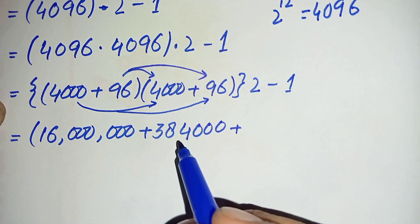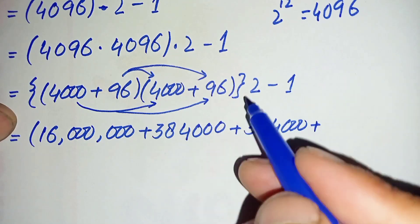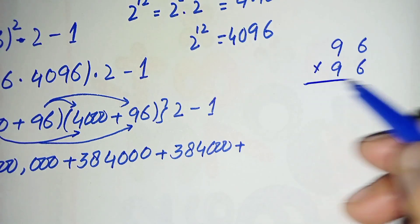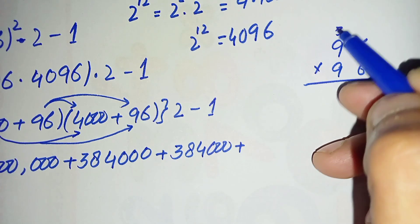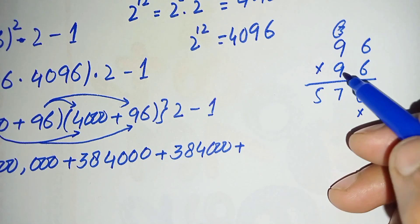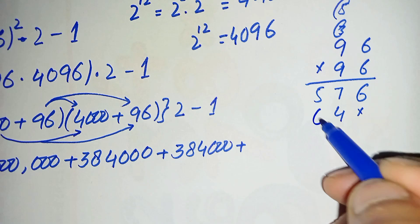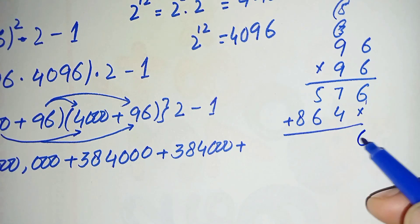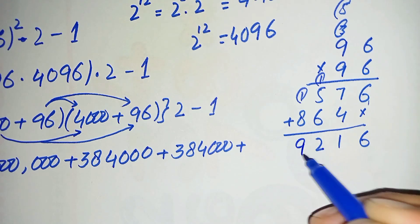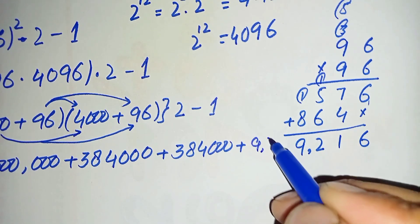Again 96 times 4000 gives 384,000. Now we multiply 96 times 96: 6 times 6 is 36, carry 3; 9 times 6 is 54 plus 3 is 57. Then 9 times 6 is 54, carry 4; 9 times 9 is 81 plus 5 is 86. Adding the partial products: 96 times 96 equals 9,216. We replace 96 times 96 with 9,216.